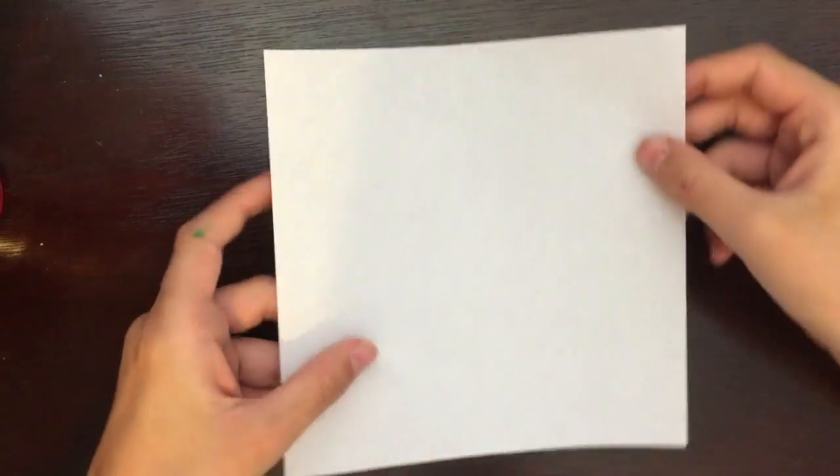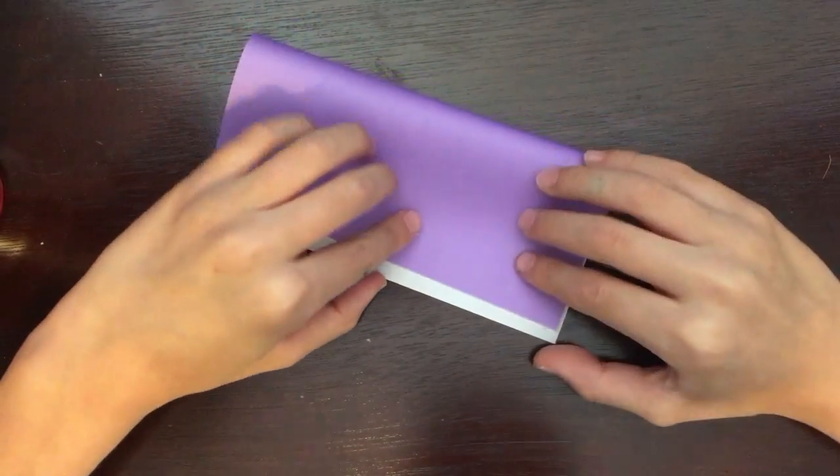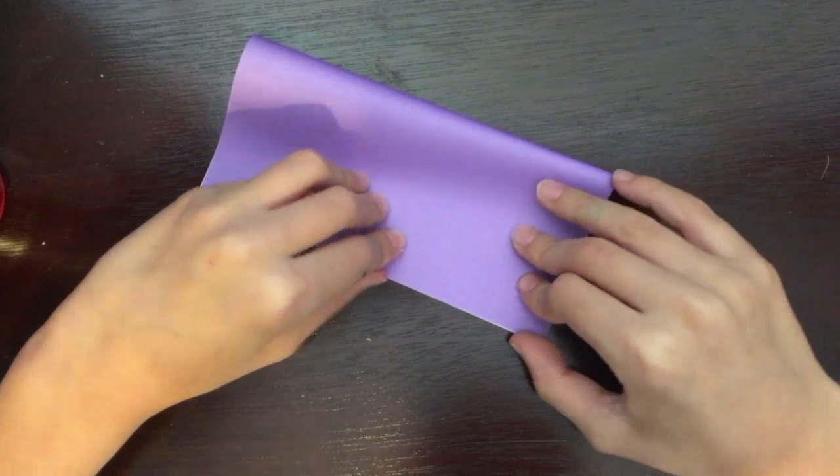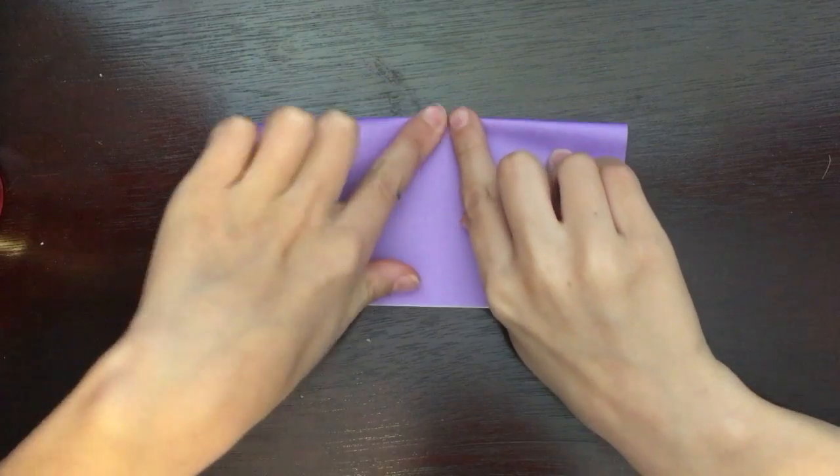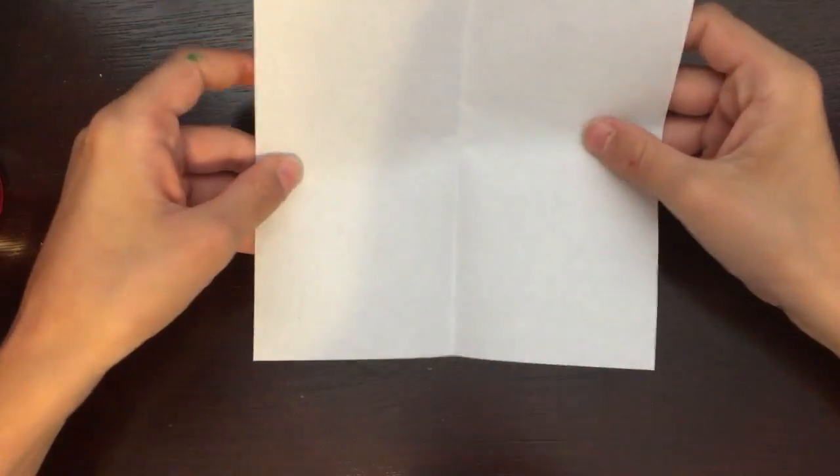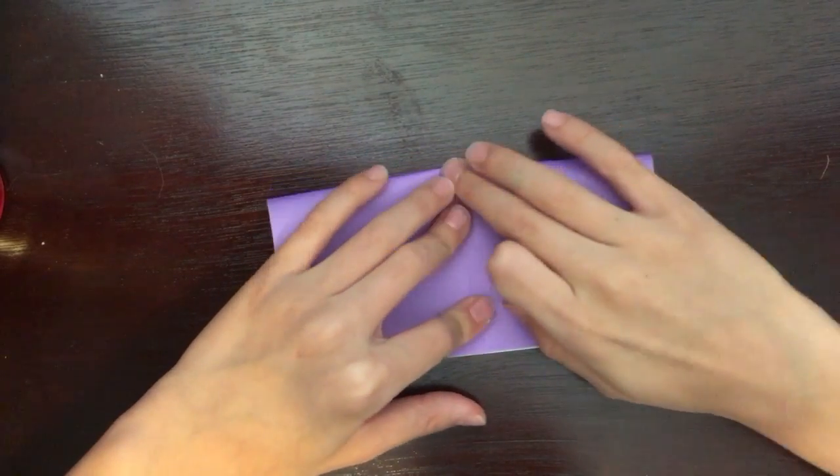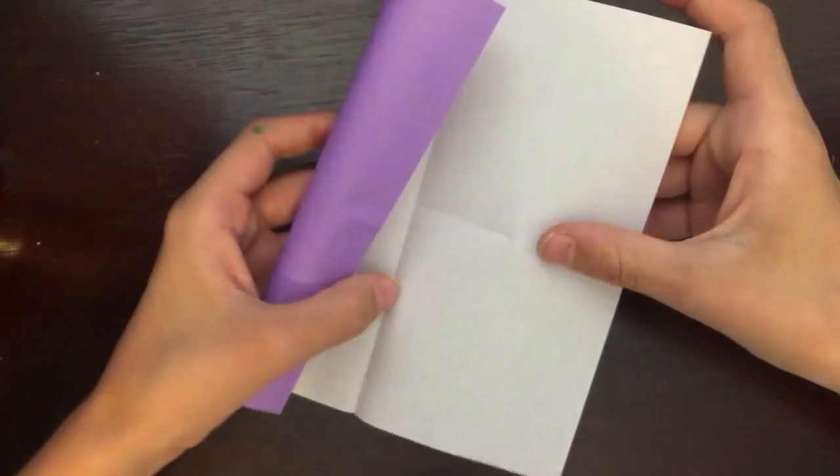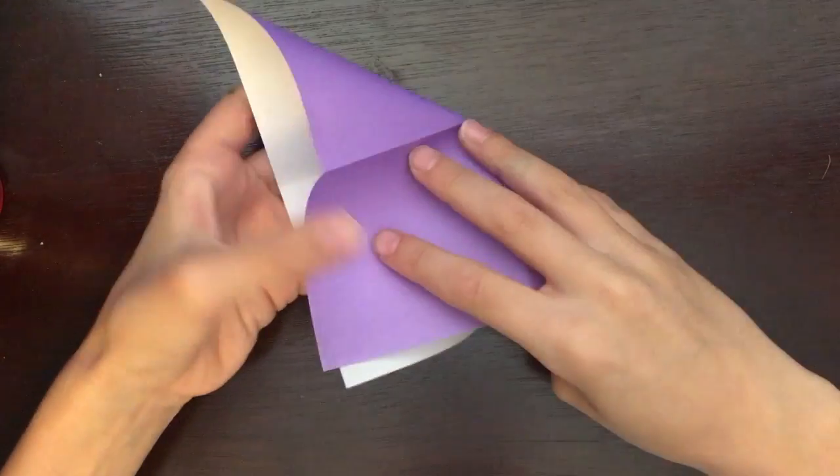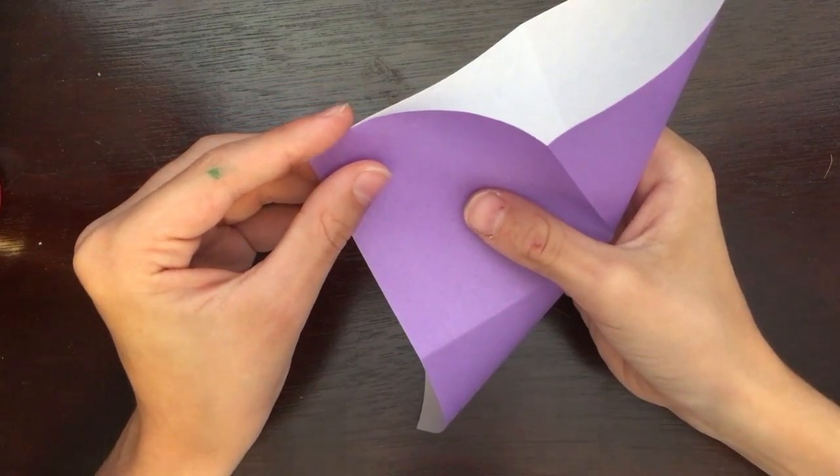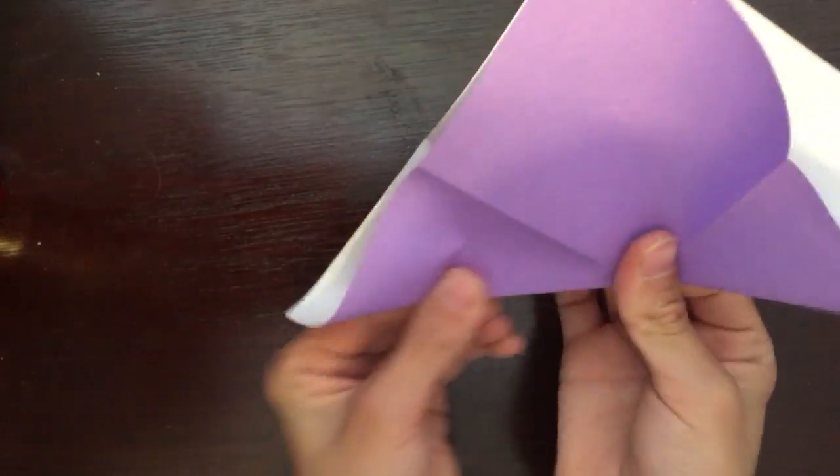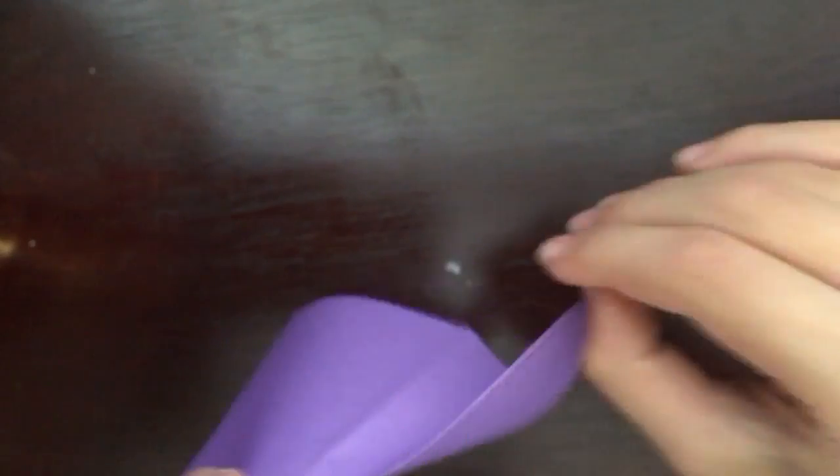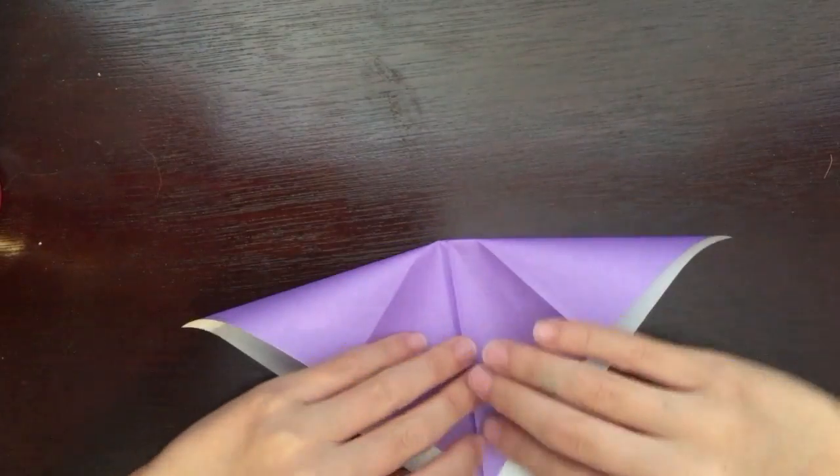We're first going to be starting with the water bomb base. Now first you're going to fold it in half like this, and then you fold it in half like this. Make sure your creases are nice and sharp. Oh, by the way, I am recording in 4K video just to let you guys know. And then you need to fold it like this and then the other way.